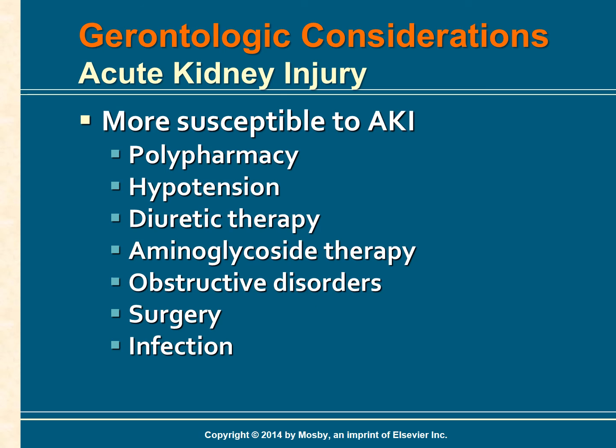Gerontology considerations: older adults are at risk for the same causes of AKI as younger adults; however, they are more susceptible due to dehydration from diuretics and laxatives, acute febrile illnesses, hypotension, antibiotics, and obstructive disorders such as prostatic hyperplasia. Impaired function of other organ systems from cardiovascular disease or diabetes can also increase the risk for developing AKI. The aging kidney is less able to compensate for changes in fluid volumes, solute load, and cardiac output.